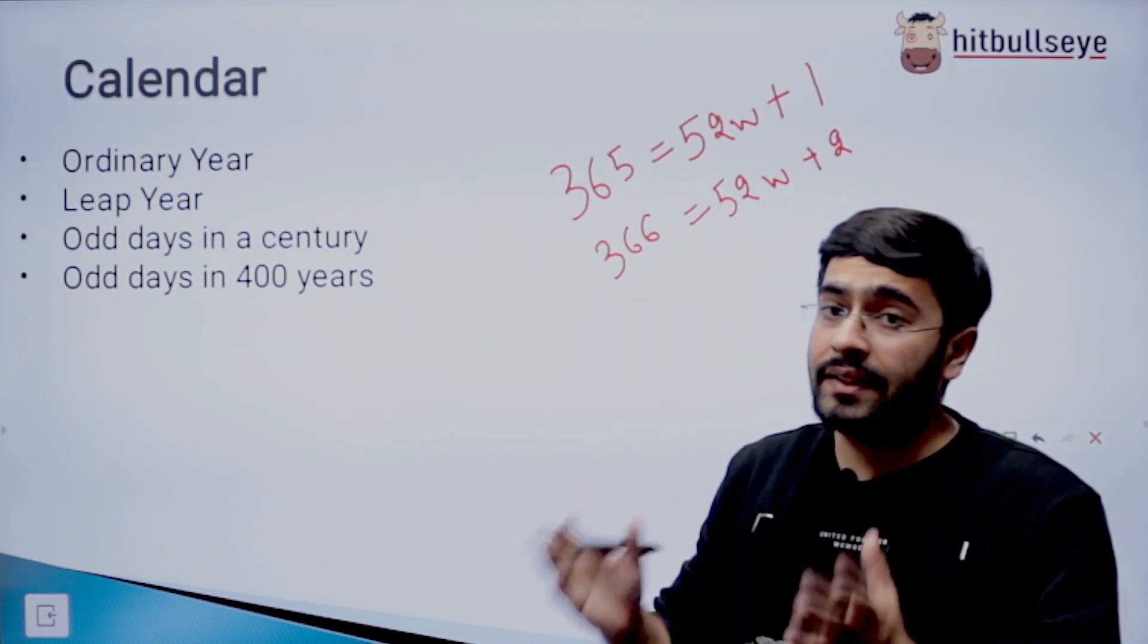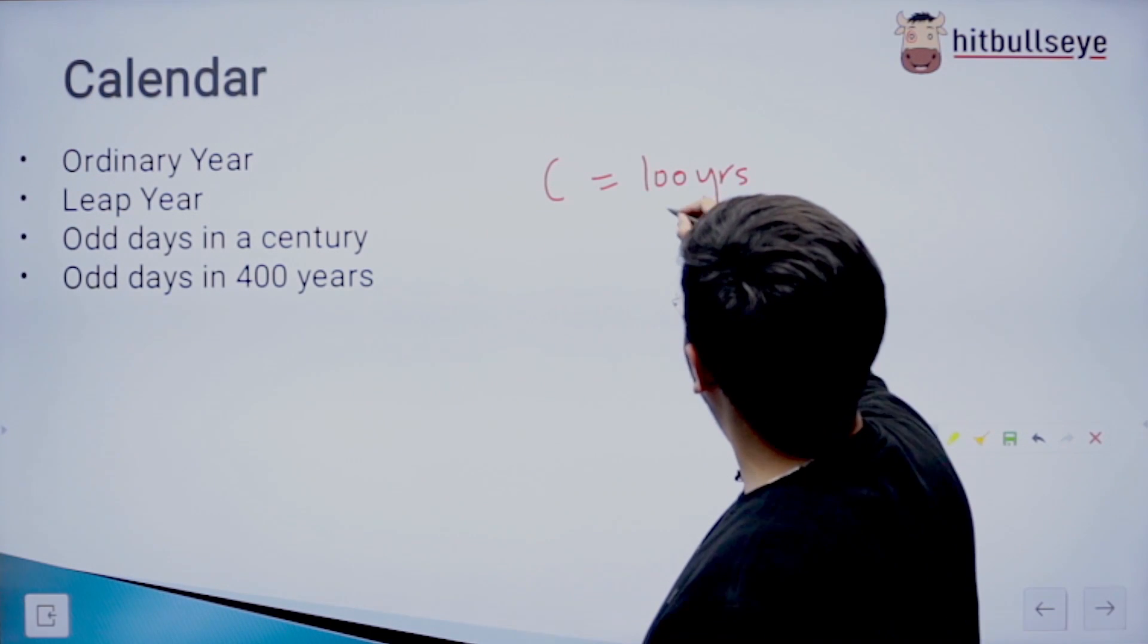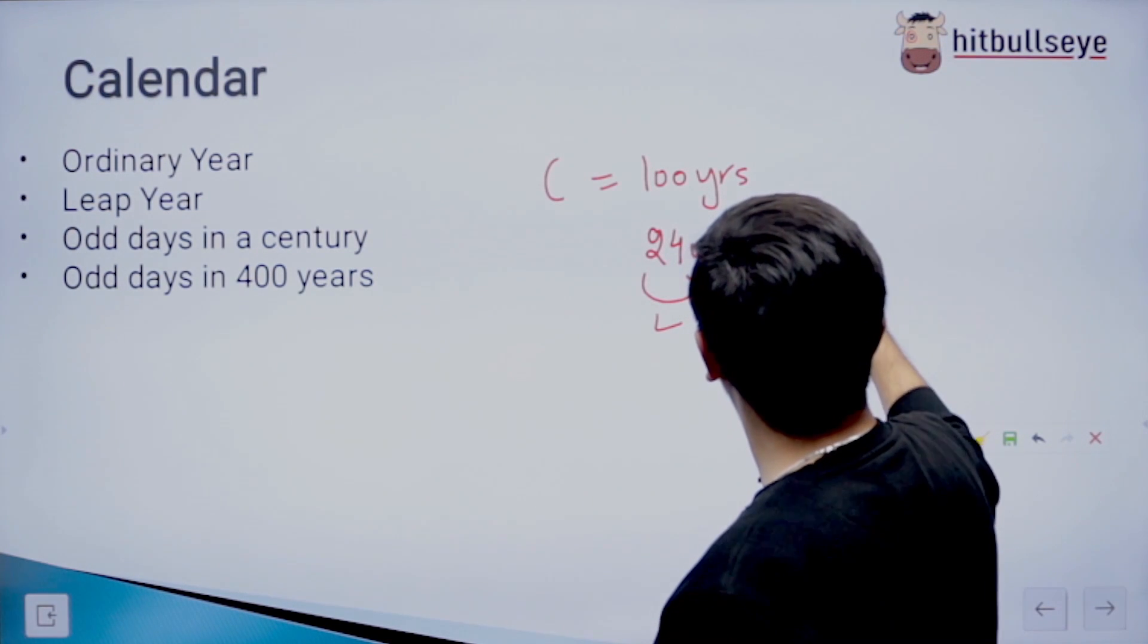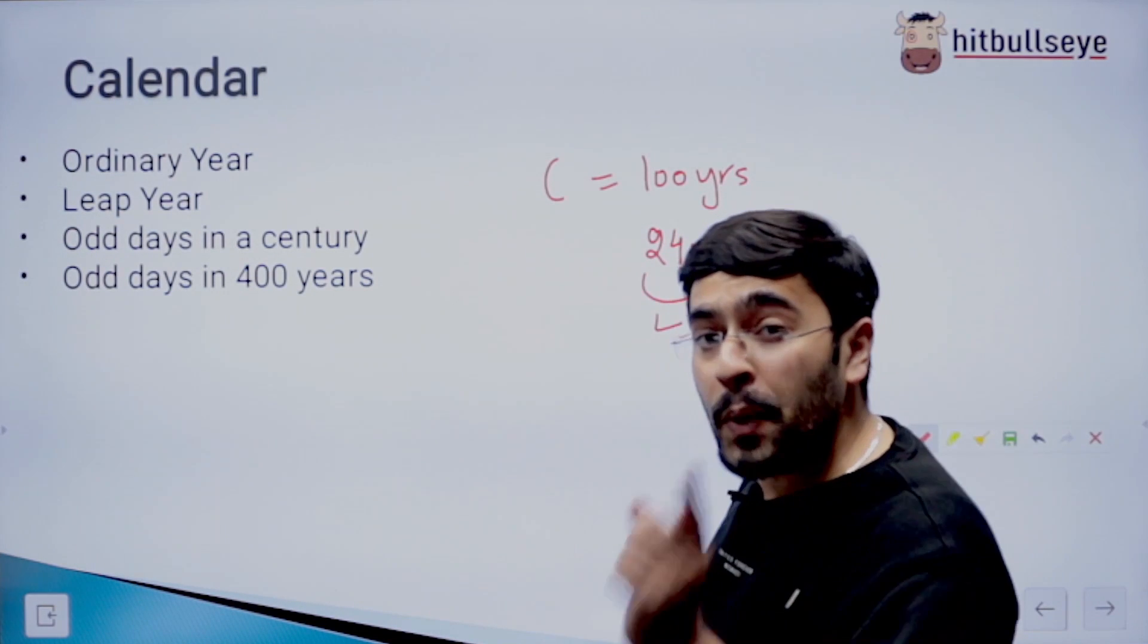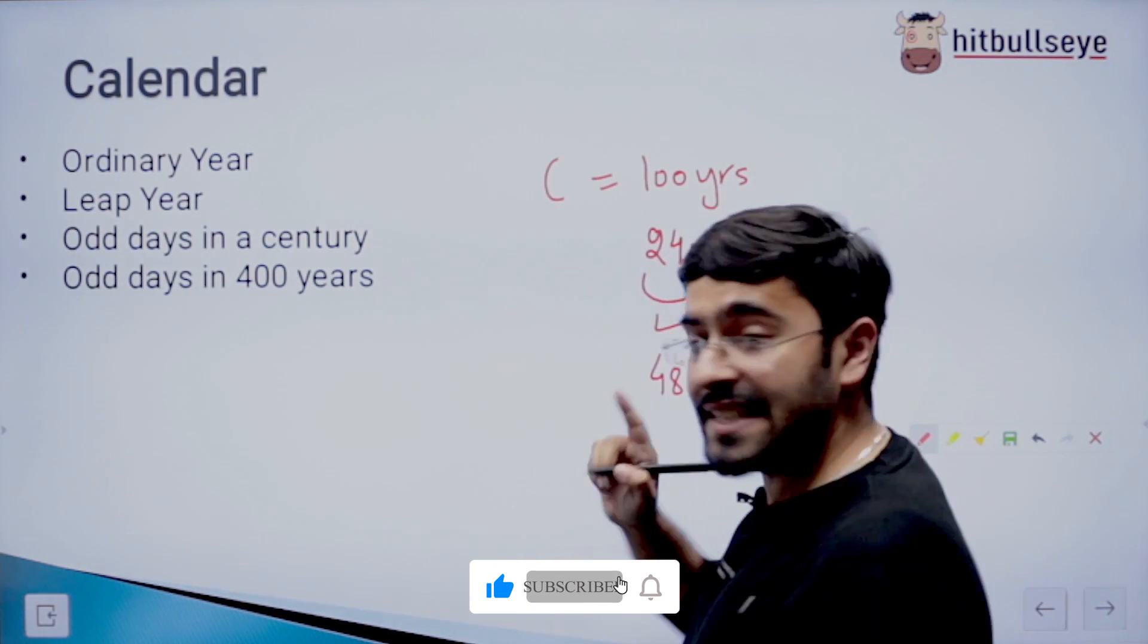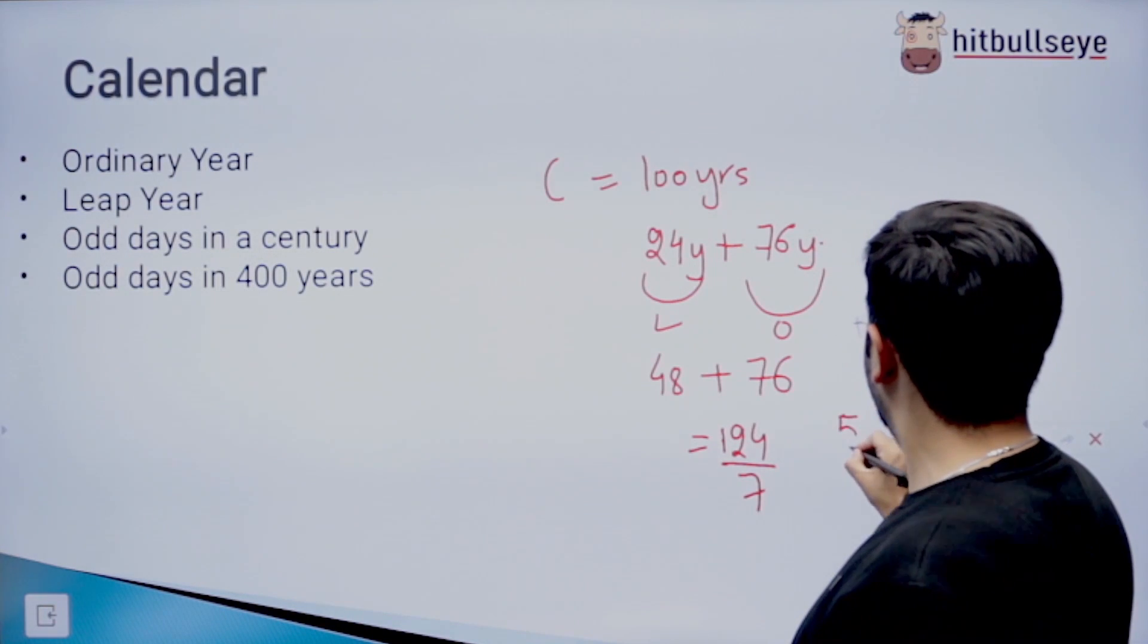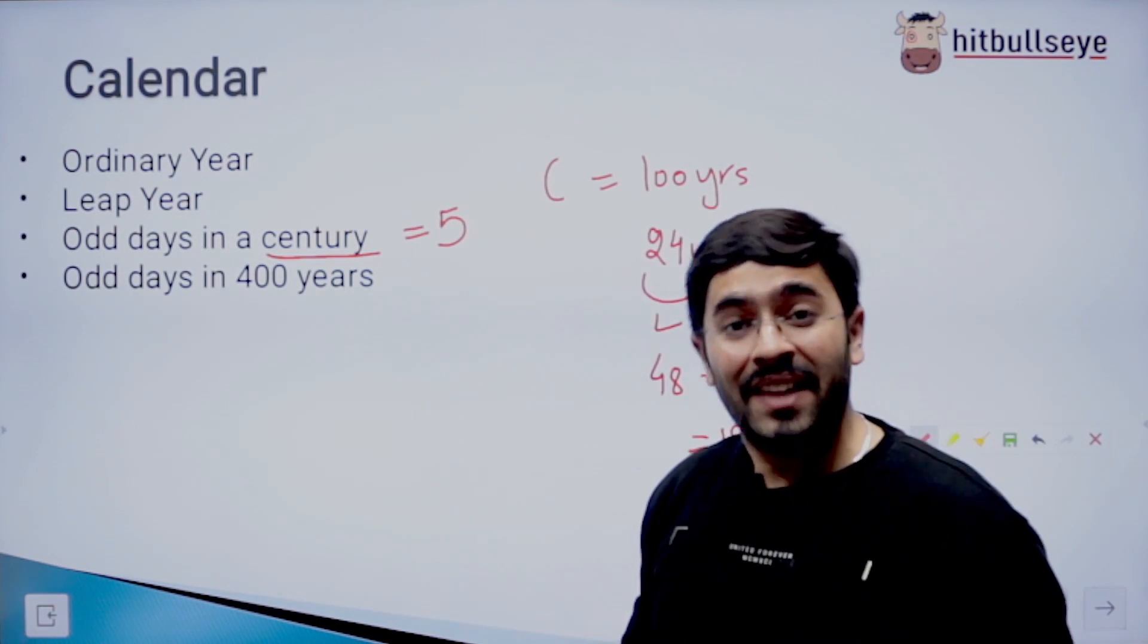So talking about how many odd days are there in a century. A century has 100 years, meaning that out of those 100 years, 24 years are going to be leap year, whereas the remaining 76 are going to be ordinary years. So 24 years that are leap years give a total of 24 into 2, that is 48 odd days, and 76 years give a total of 76 into 1, which is 76. You add them and you get 124. Now you divide it by 7 and you get a remainder of 5. Meaning that in a century, the number of odd days are 5.